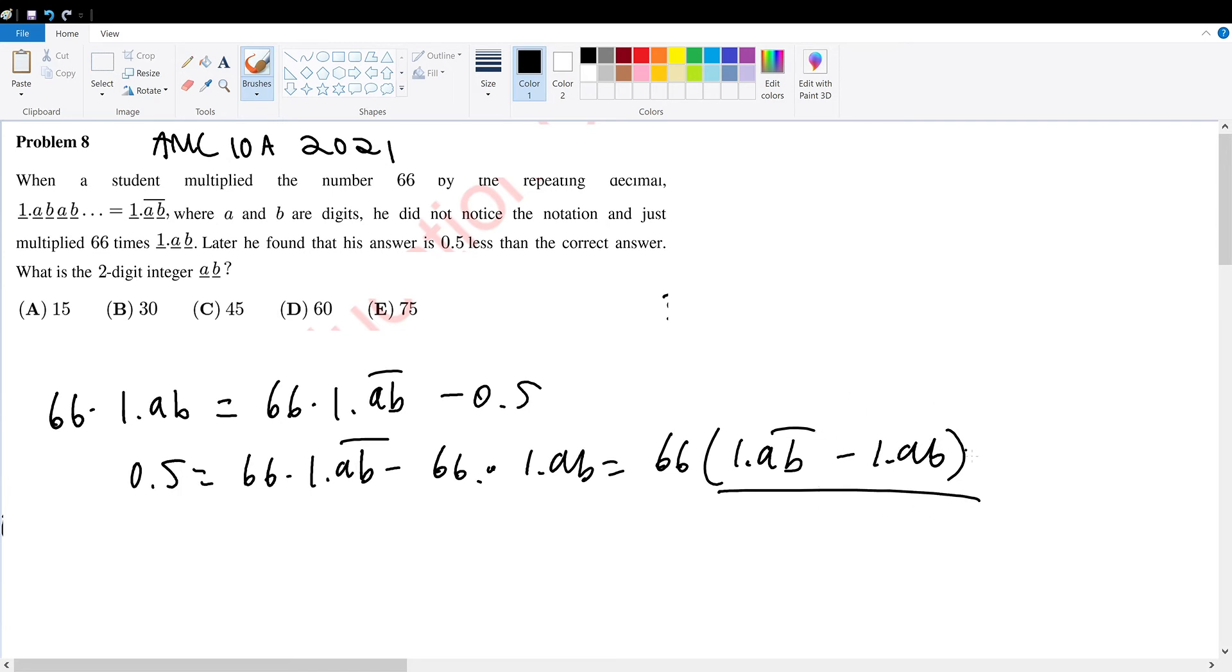Now we can evaluate this to be equal to 0.00AB repeating. Therefore, this would be equal to 66 times 0.00AB repeating. Now we can divide 66 on both sides. So 0.00AB repeating will be 0.5 over 66.